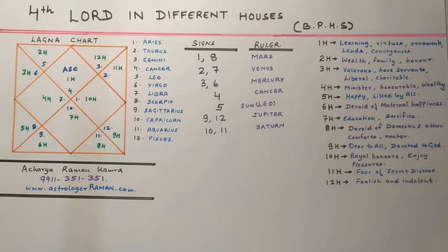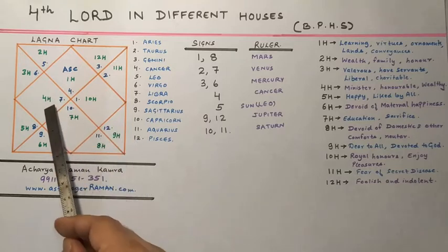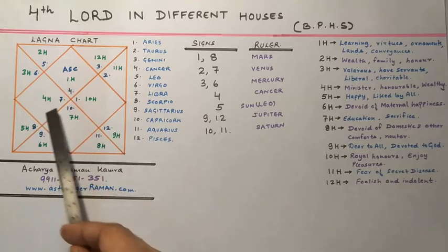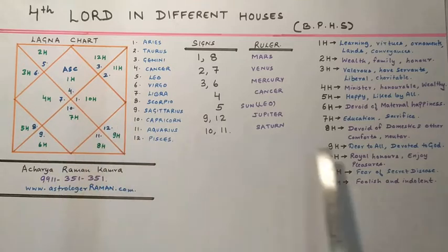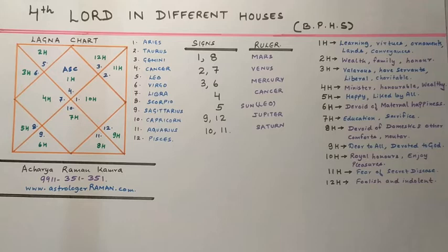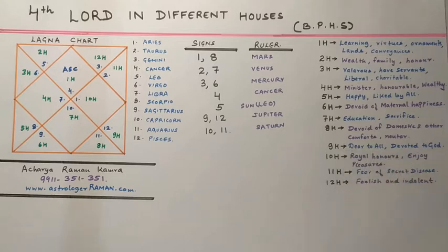If the 4th lord be placed in the 9th house, the native will be dear to one and all. He would be devoted to God, virtuous, honourable, and will be wealthy and happy in every land.